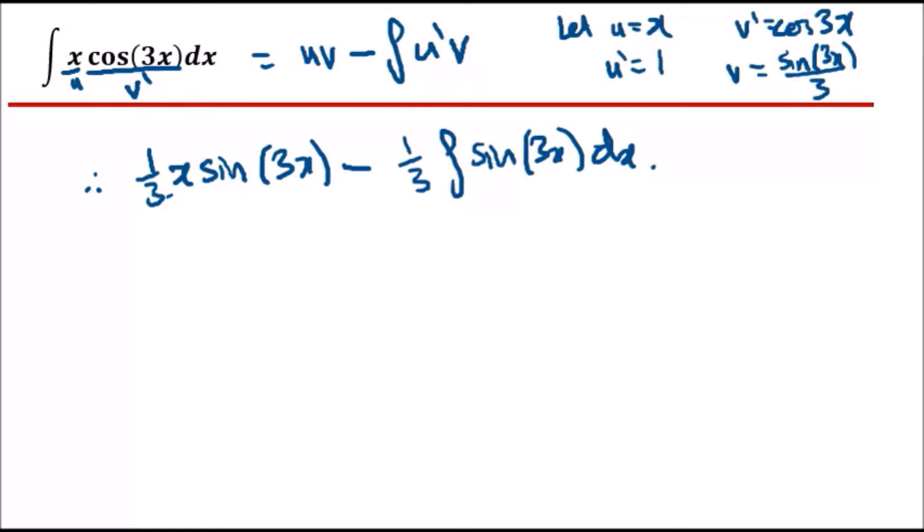Cos gives us positive sine, sine gives us negative cos. So the final solution would be one-third x sine(3x) minus, and because this gives you a minus, it'll be a positive. So one over three times a third is one-ninth cos(3x)...